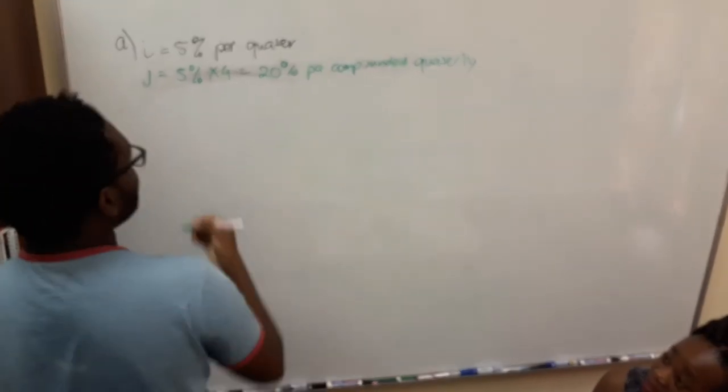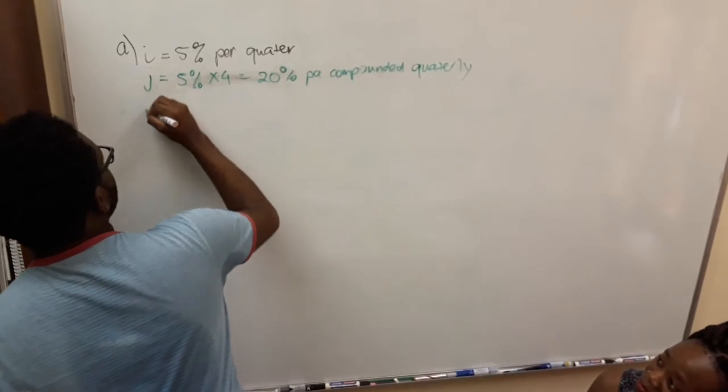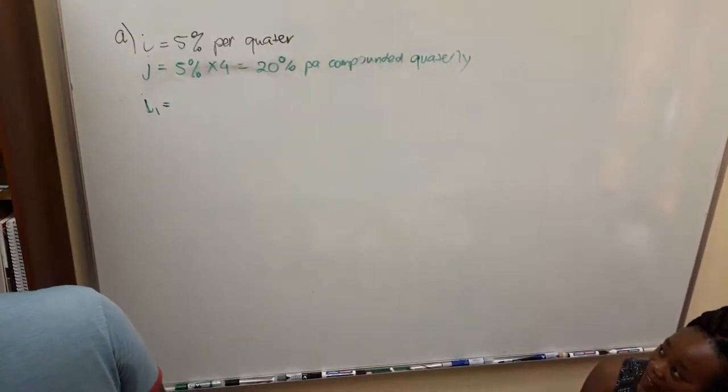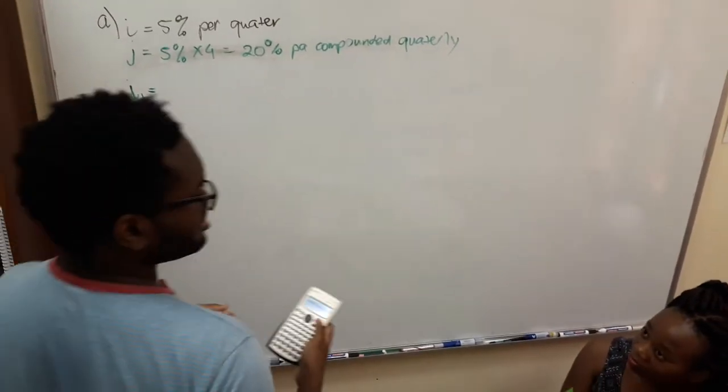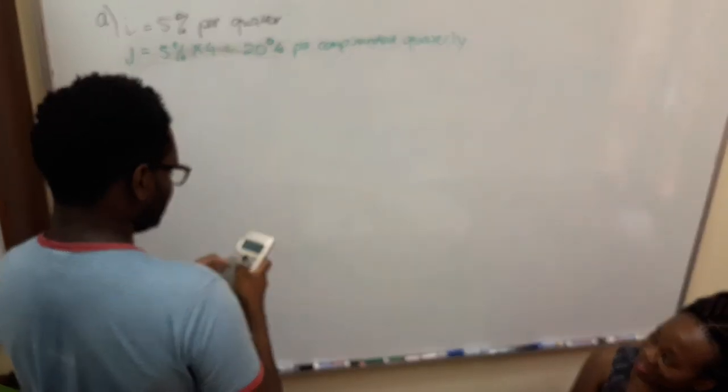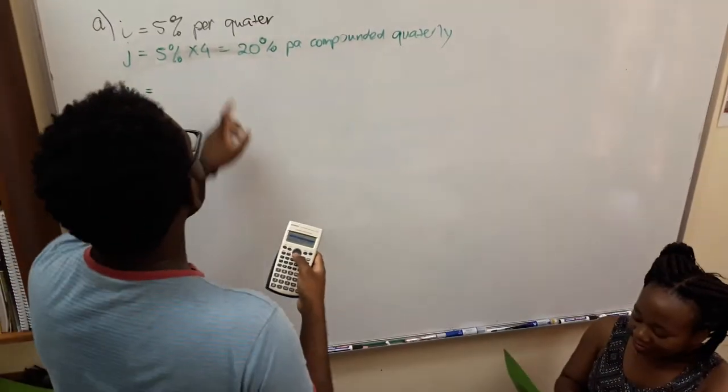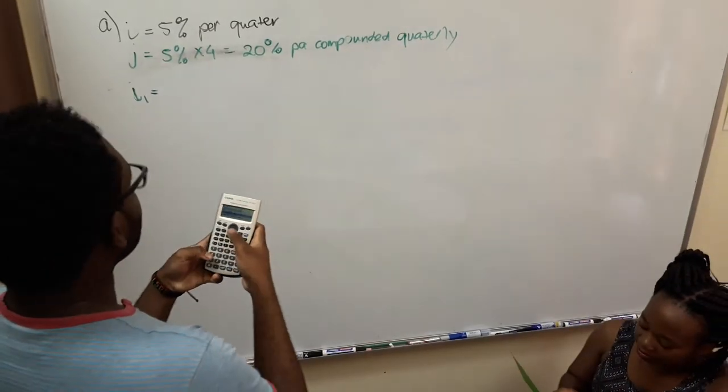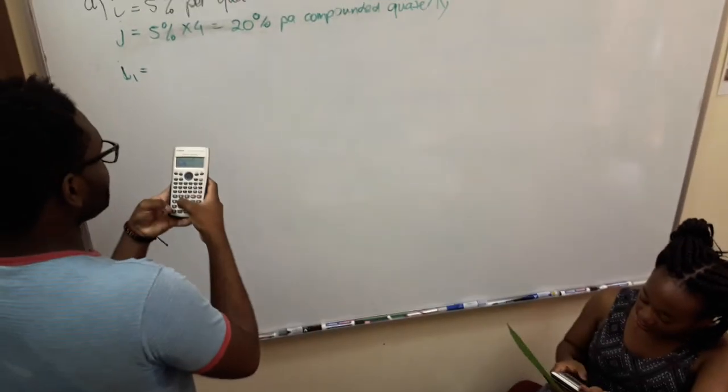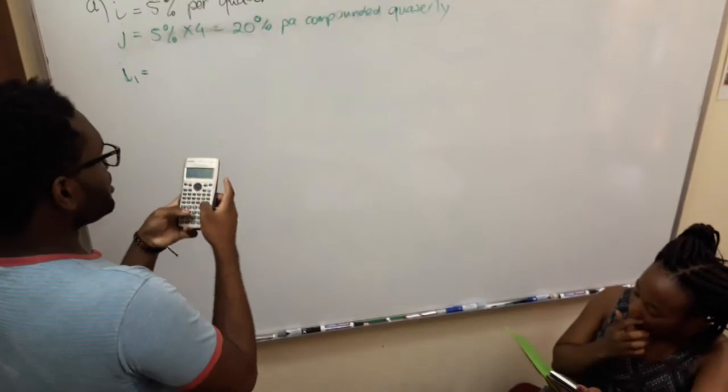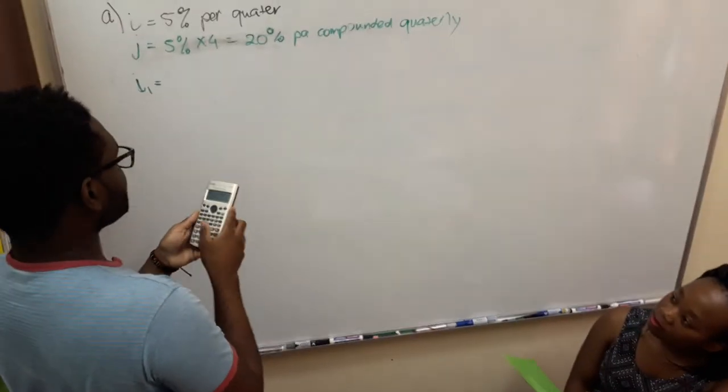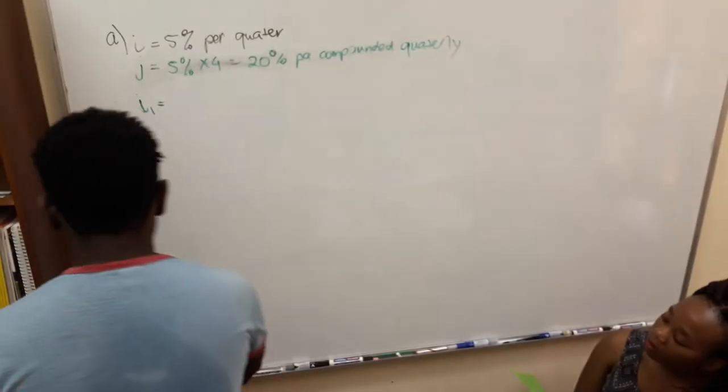Now we can go straight to our calculators and convert the J into the effective interest rate. You go to convert. Since you're working in quarters, the N is going to be 4. I is going to be 20. We're solving effective, so we click solve. And this gives us an effective figure of